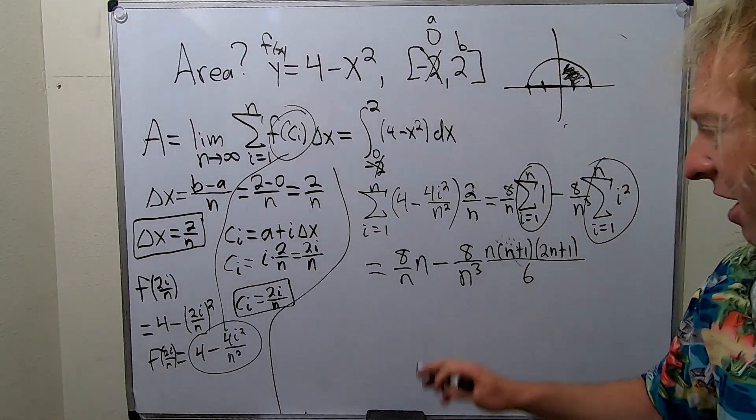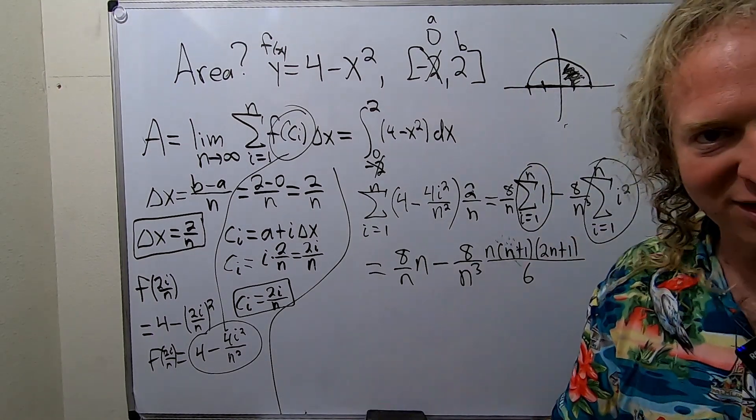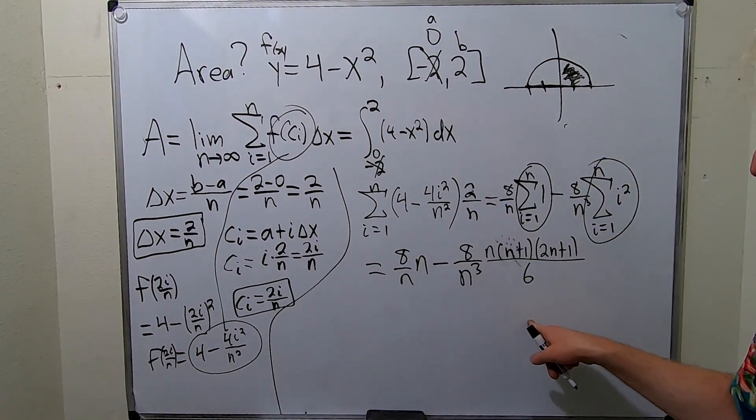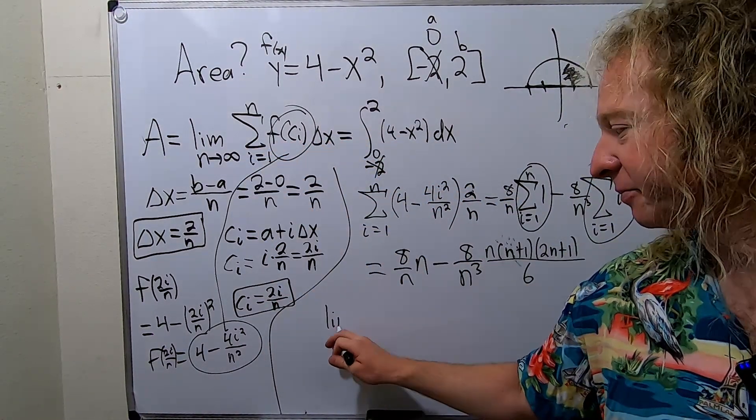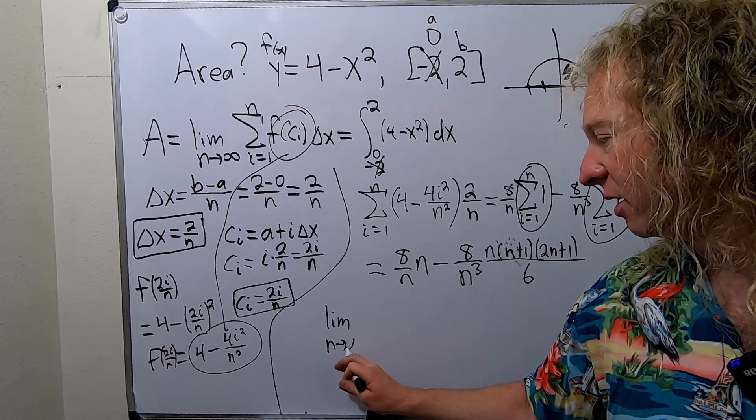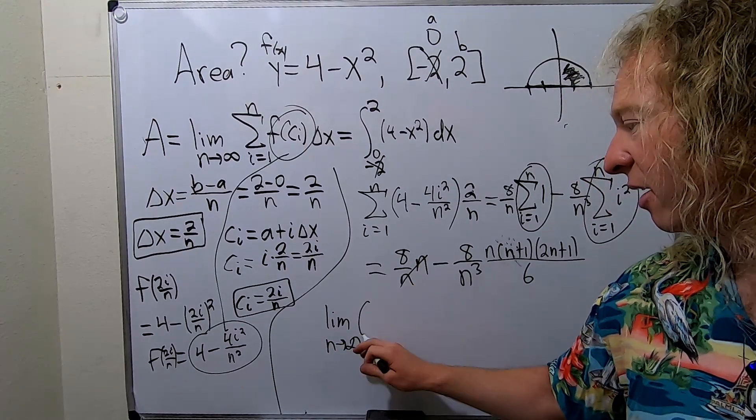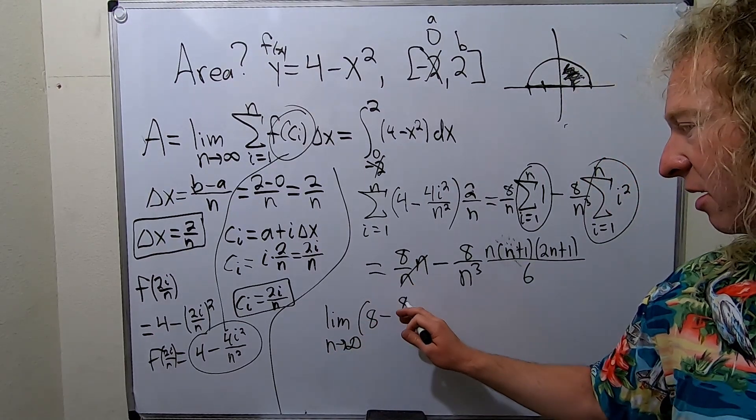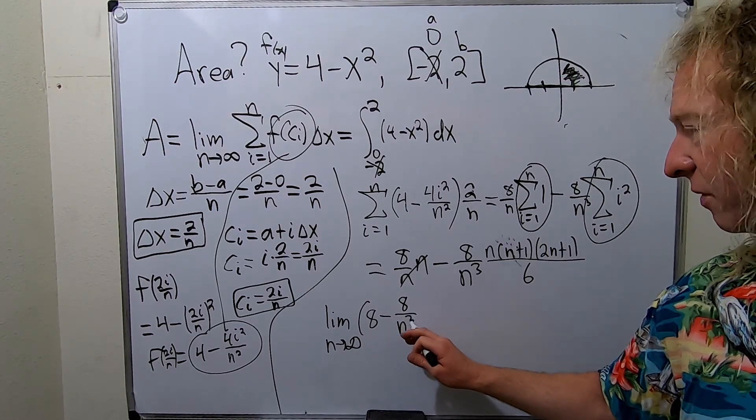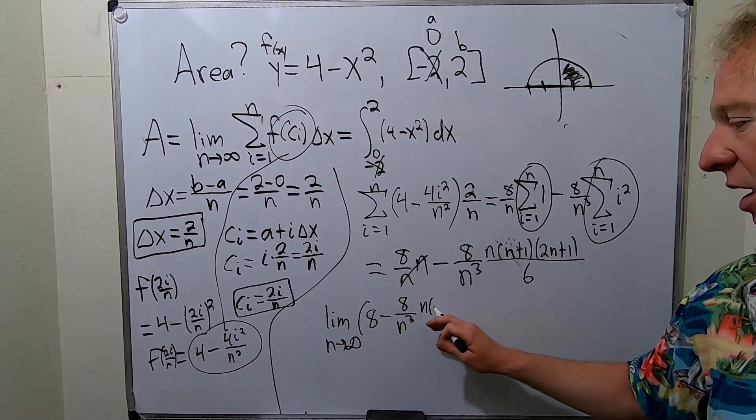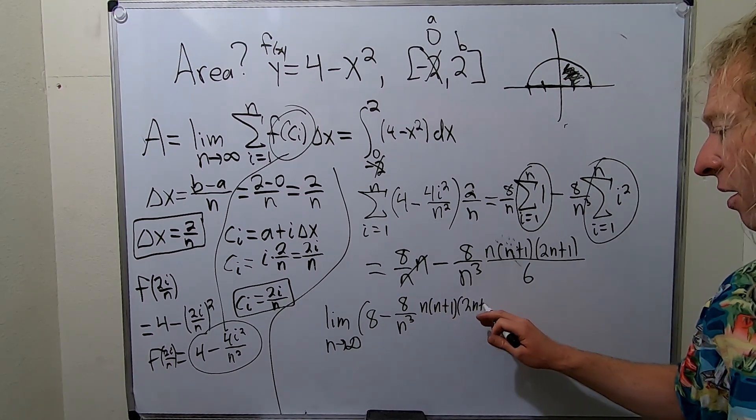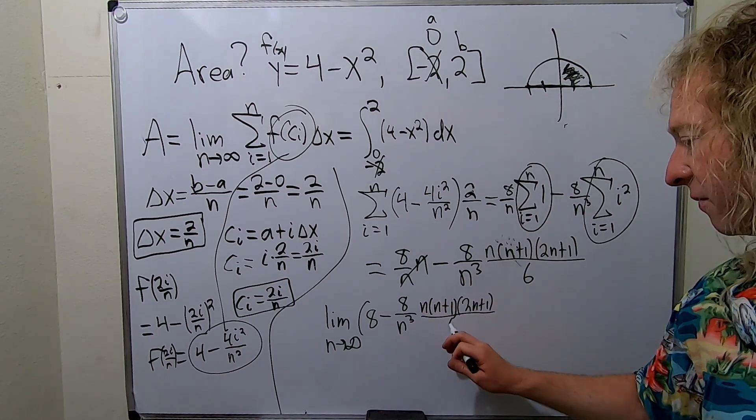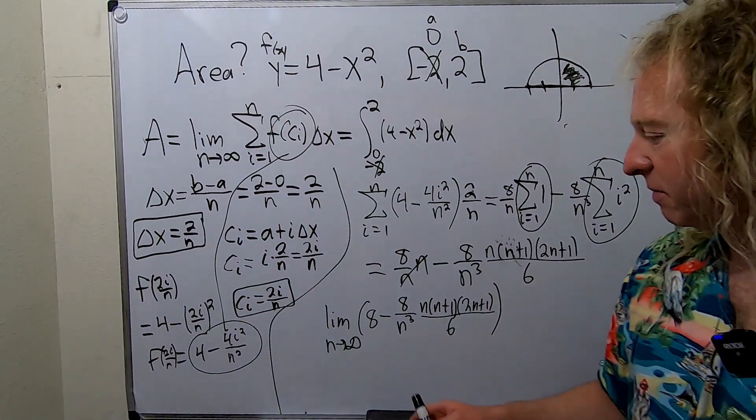Now we're ready to take the limit. I know these cancel, but I'll write that later. So we've used our formulas, so now we have to take the limit, and that's almost the answer. So the limit as n goes to infinity, I'll go ahead and cancel this, of 8 minus 8 over n cubed, and then we have n, n plus 1, 2n plus 1, and it's all over 6.